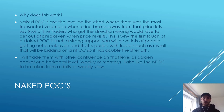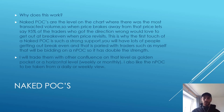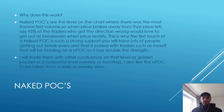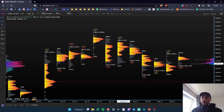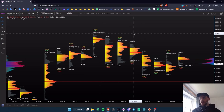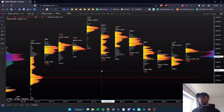Even myself, I'll be bidding on a naked point of control, so it has double the strength. I will trade them with other confluence on that level, such as a golden pocket, horizontal level, or weekly or monthly level. I also like the naked point of control to be taken from a daily or weekly view. Let me just show you quickly on Exo Charts on a weekly time frame.